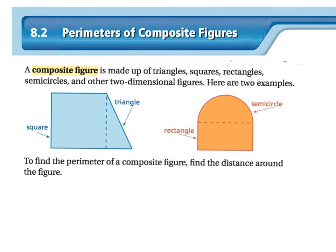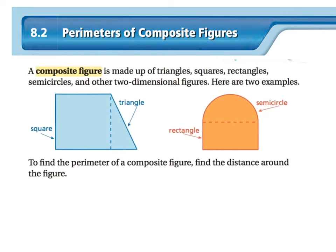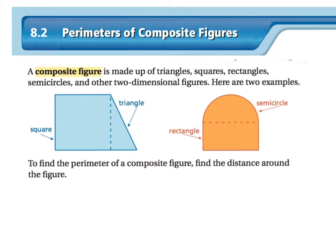is made up of triangles, squares, rectangles, semicircles, and other two-dimensional figures. These are just examples. Basically, the easiest way to put it is it's multiple shapes mushed together to give you one bigger shape.